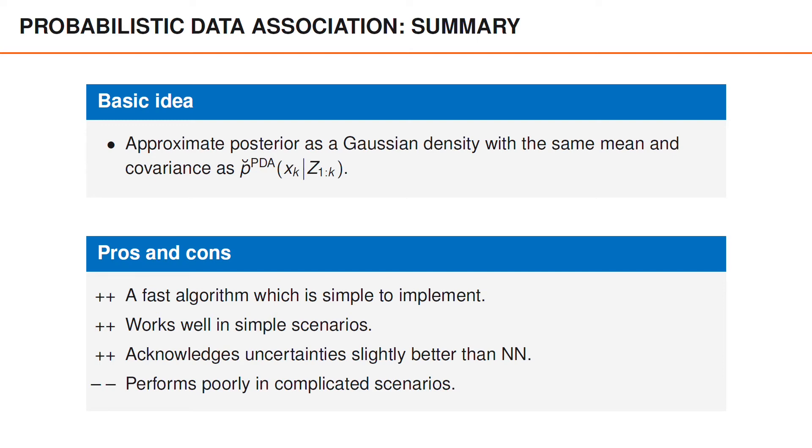To summarize, the idea behind PDA is to merge all hypotheses and approximate the Gaussian mixture p-breve as a Gaussian density with the same mean and covariance as p-breve. The PDA filter is a fast algorithm which is easy to implement, it works well in simple scenarios, and it does not underestimate the uncertainties to the same extent as the nearest neighbor algorithm.